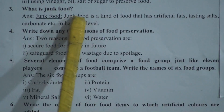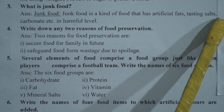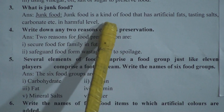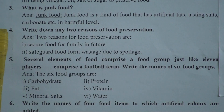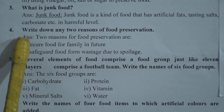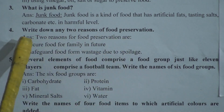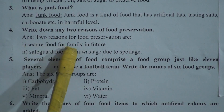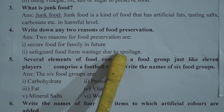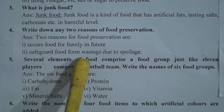Question 3: What is junk food? Answer: Junk food is a kind of food that has artificial fat, salt, carbonates, etc. at harmful levels. Question 4: Write down any two reasons for food preservation. Answer: Two reasons for food preservation are — first, to secure food for the family in the future; second, to safeguard food from waste due to spoilage.